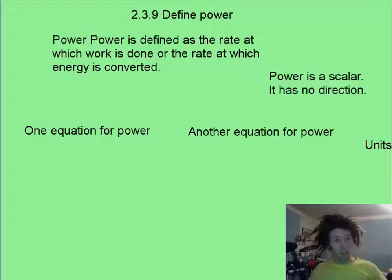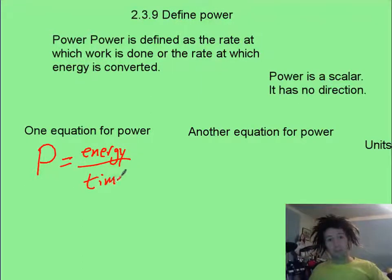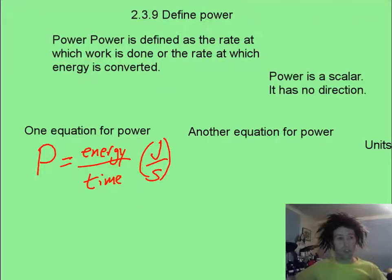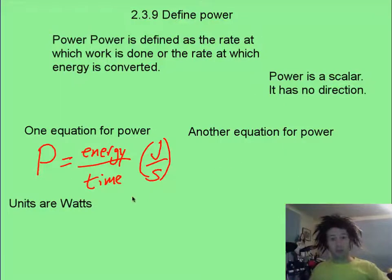Now, the equations for power, unfortunately, are pretty simple. You can say that power is energy over time, and the units for that are going to be joules per second, which you should know is a watt. Or, in other words, symbol W equals joules per second.